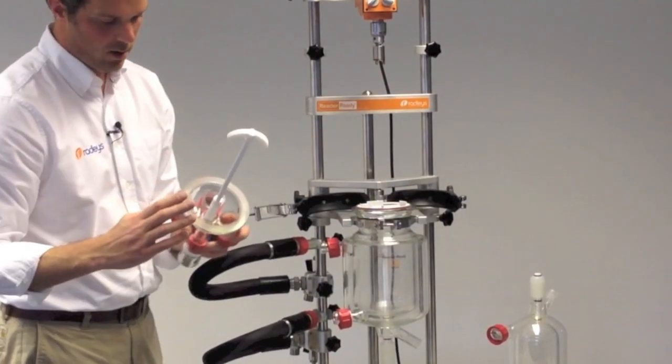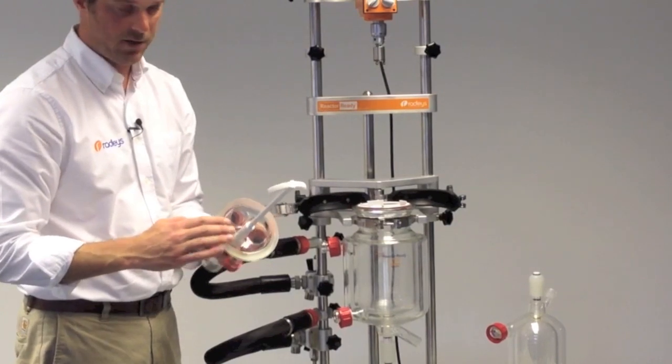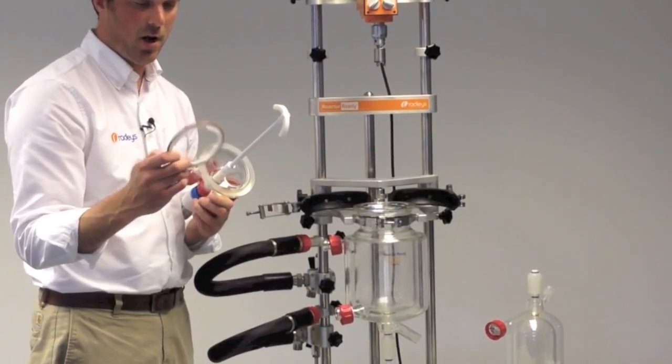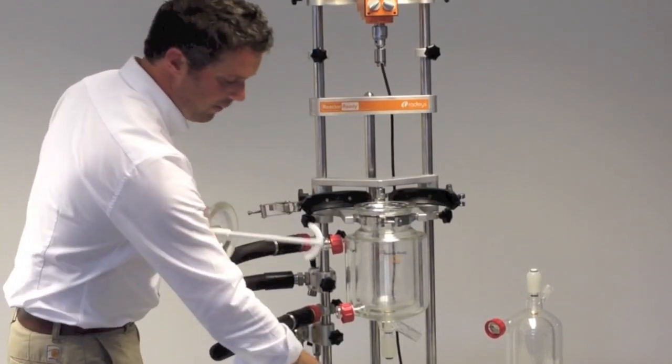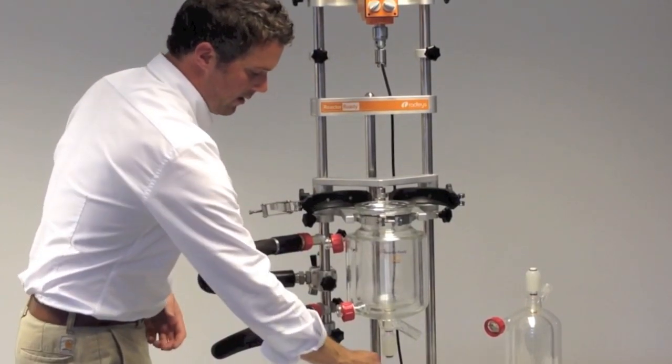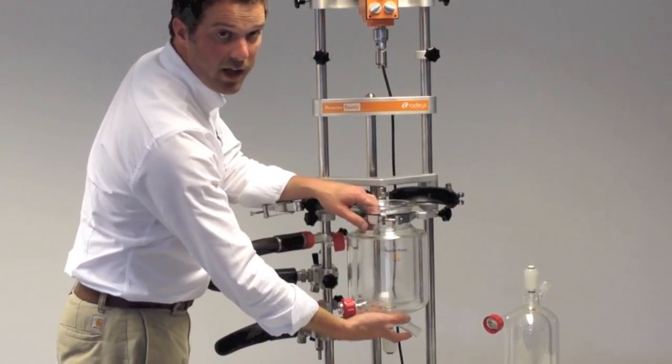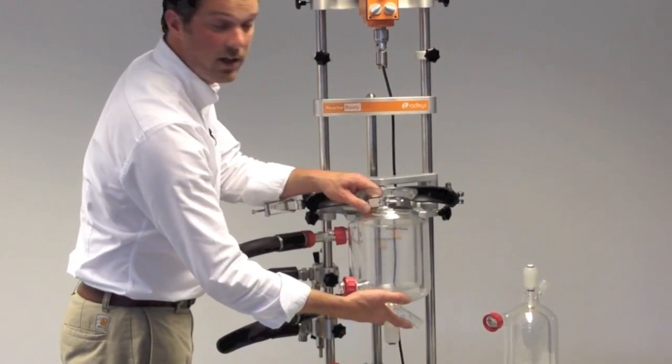You can see on the lid we have a flat flange on the lid, an FEP encapsulated o-ring with a PTFE support collar, and then a flat flange on top of the vessel. The combination of these offers a really good vacuum tight seal.